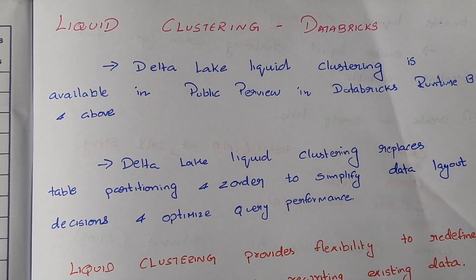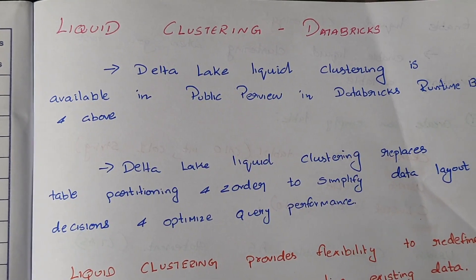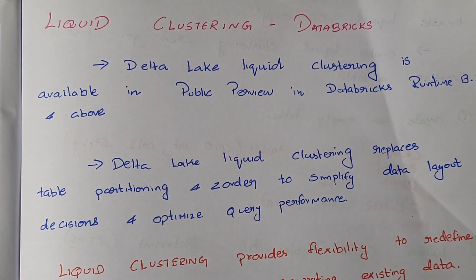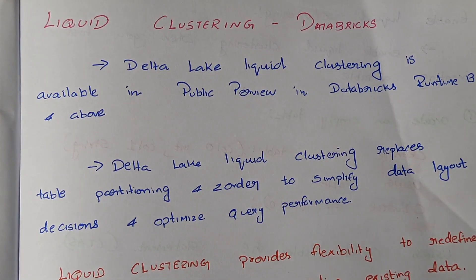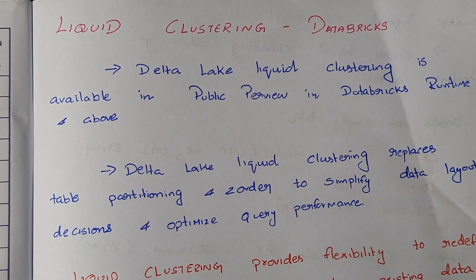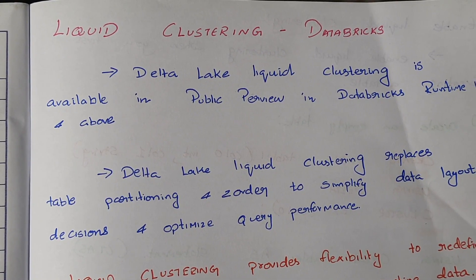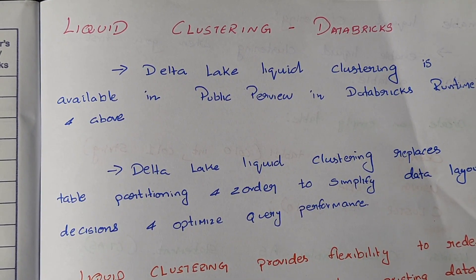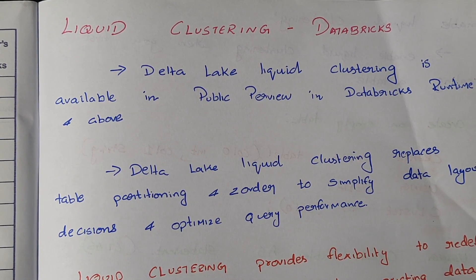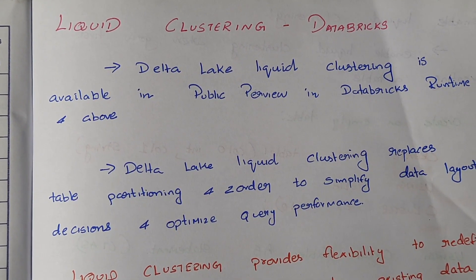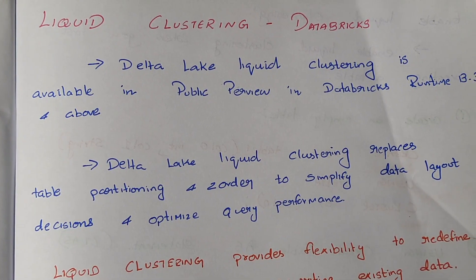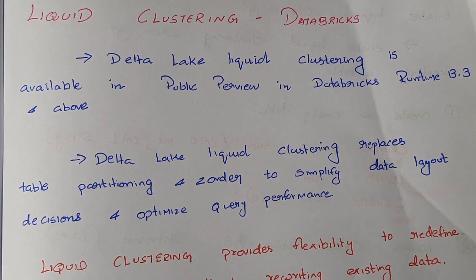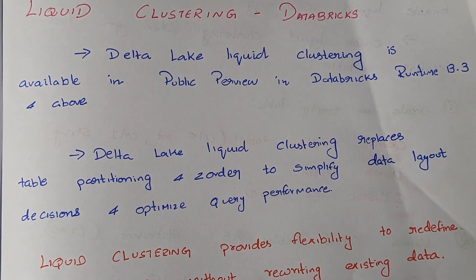Hi friends, today we're going to look at a new concept in Databricks: liquid clustering. Liquid clustering enables users to change the partition column on the fly. Previously, if you wanted to change the partition of a table, you needed to rewrite the entire table — reading the data as a DataFrame and then rewriting it with a new partition key. Liquid clustering comes in handy in these cases.